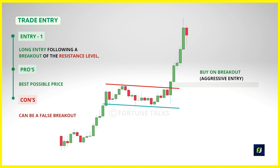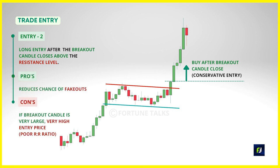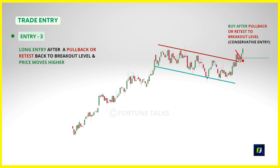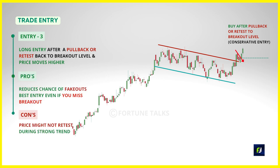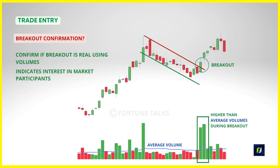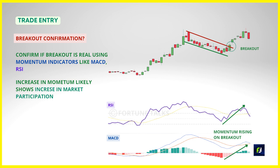There is no single best approach. Entering as the breakout happens could result in a false breakout, but gives the best price if real. Waiting for a close above the highs reduces false breakout risk but may result in entering at a much higher price. Waiting for a pullback or retest may mean missing the trade entirely in a strong trend. It is up to you to decide your entry strategy. It is always recommended to confirm breakout validity using volumes and indicators like MACD and RSI — higher than average volume validates a breakout while low volume breakouts are likely to fail.